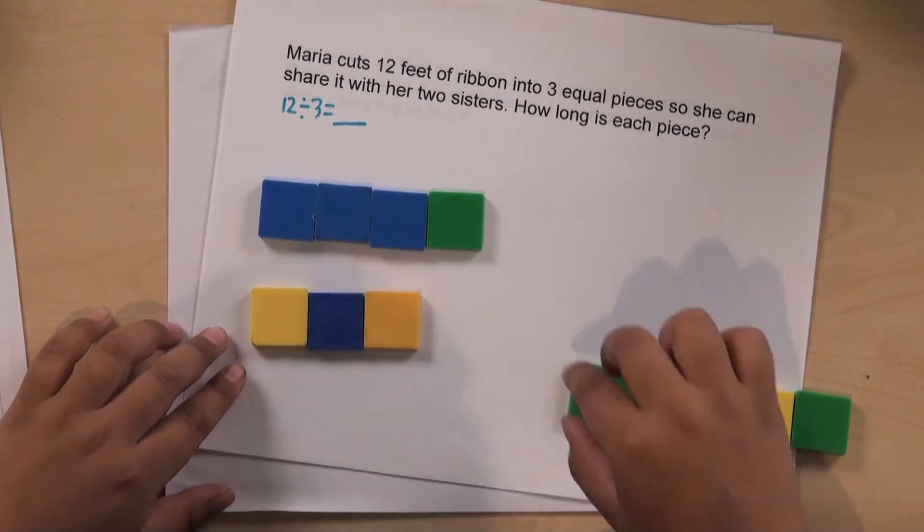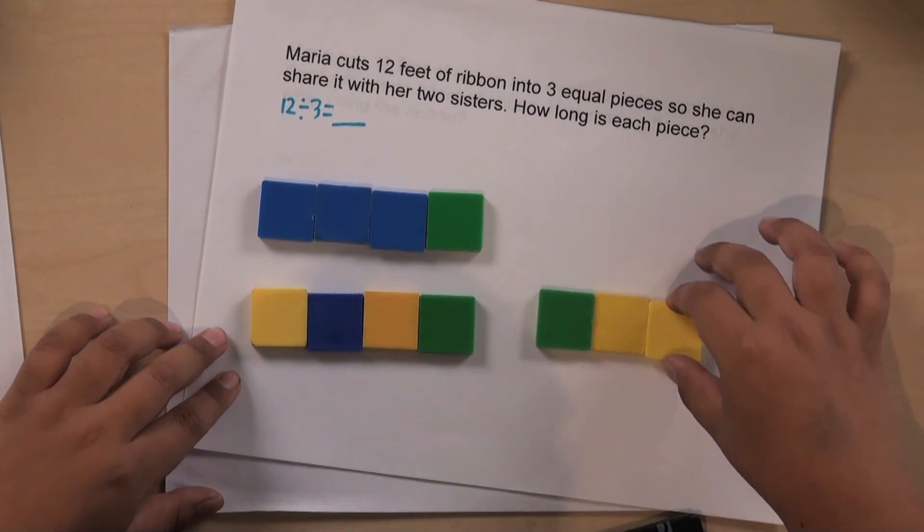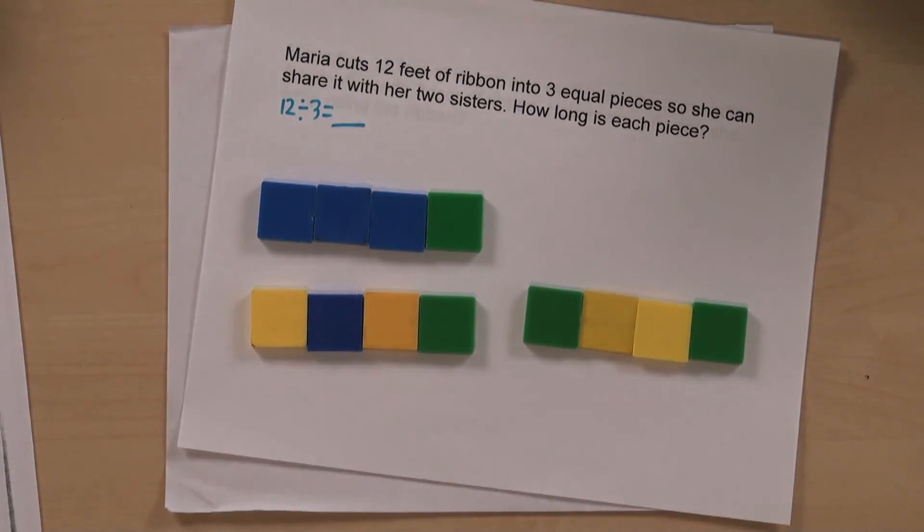They might use pictures or blocks to illustrate what the equation means. The three represents how many ribbons she needs, and the four represents the feet of the ribbons.